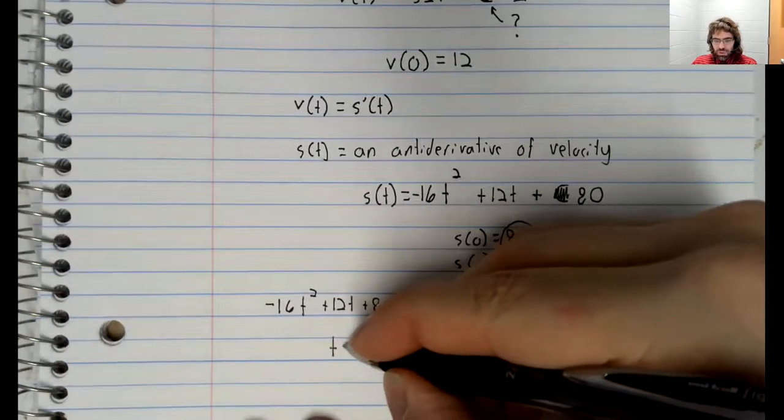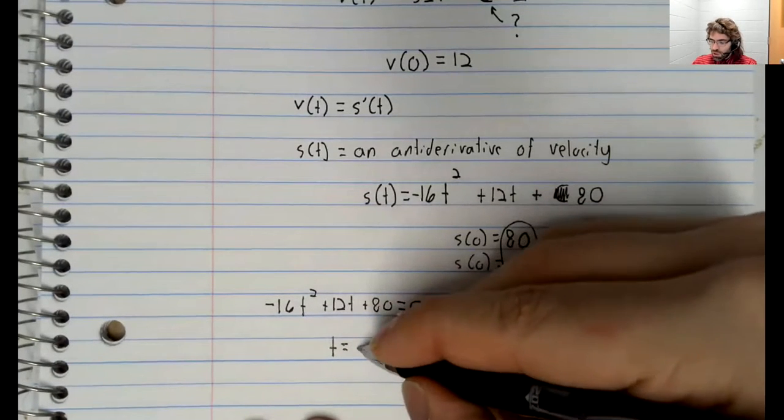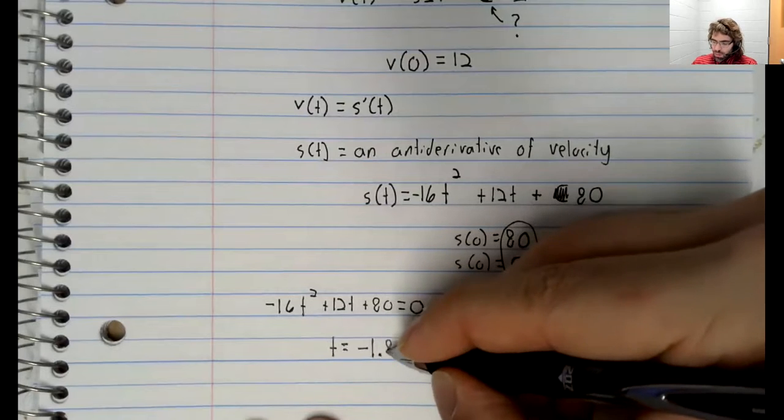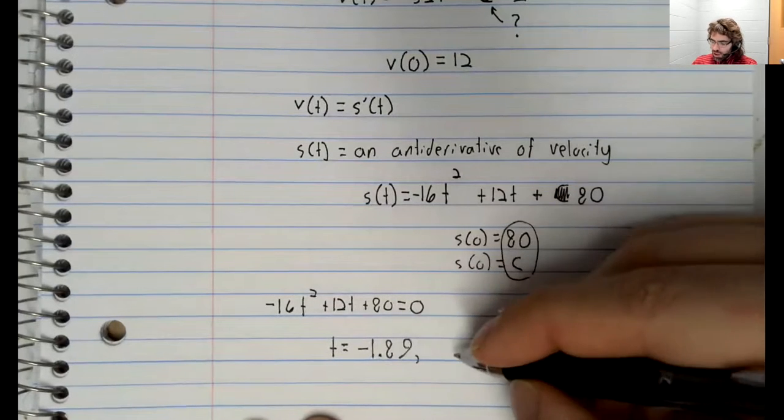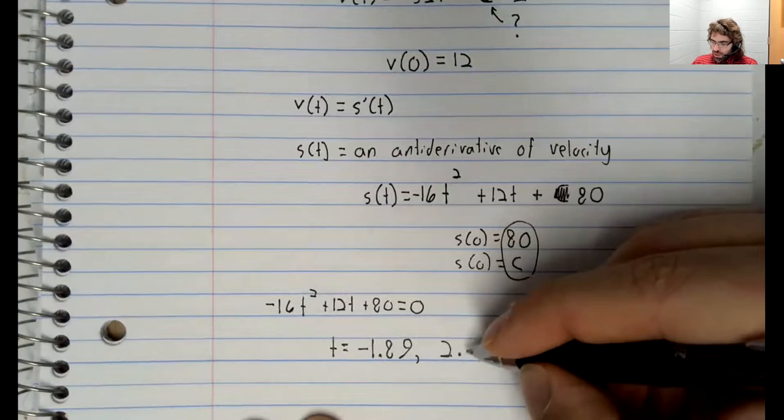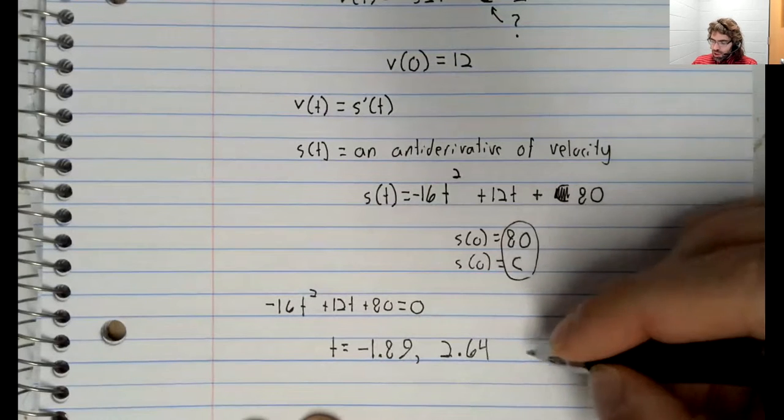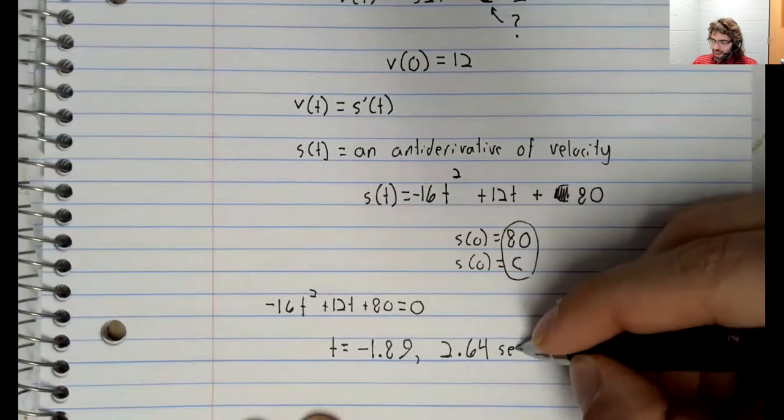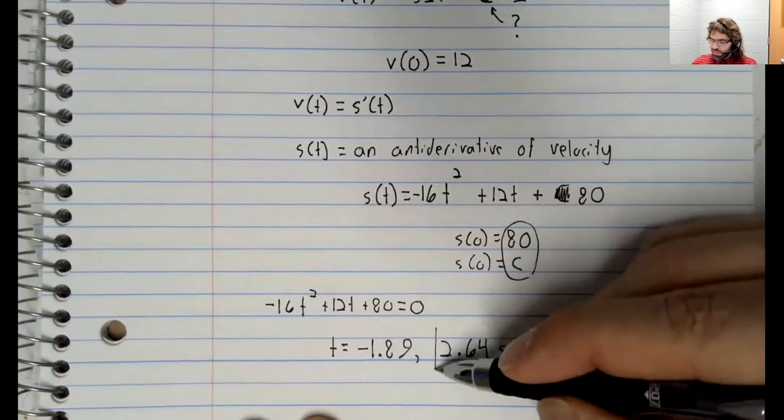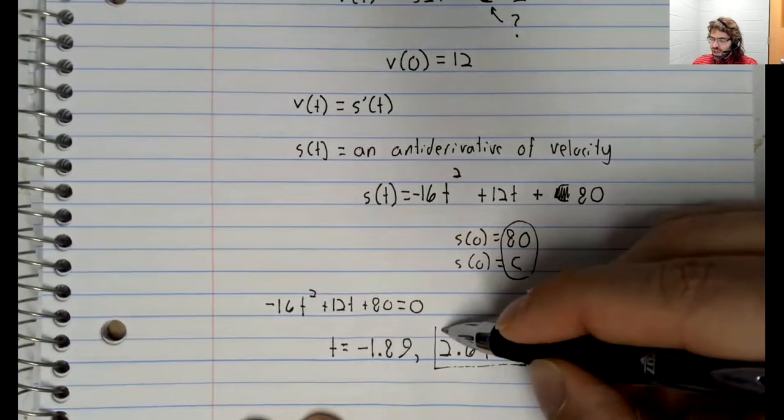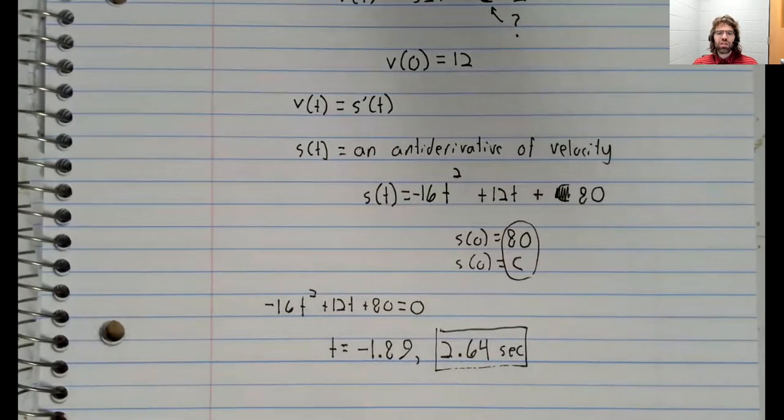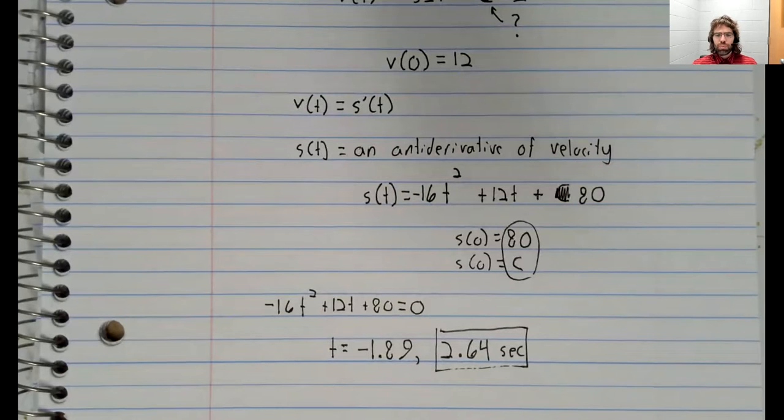You just have to use the quadratic formula. The quadratic formula gives you two answers. But time has to be positive, so the package hits the ground in 2.64 seconds.